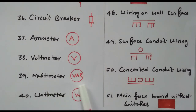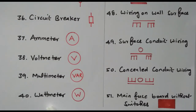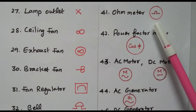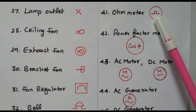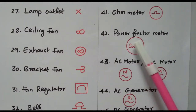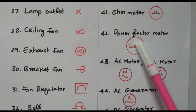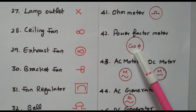Multimeter means we can measure voltage, current, and resistance, so it is represented by VAR. Then wattmeter is represented by W, since watts is the unit. Then ohmmeter uses the omega symbol for ohm, representing resistance. Then power factor meter — power factor means cos φ — is represented by a circle with cos φ written inside.